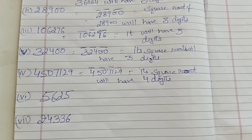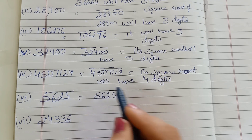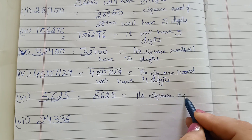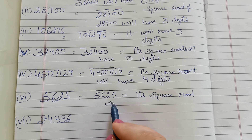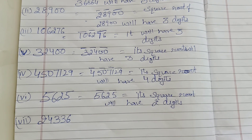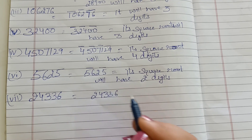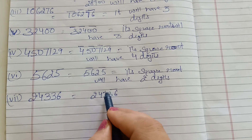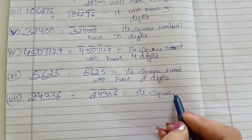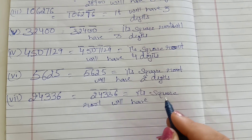Now next one is 5625. One bar, two bar. So its square root will have two digits — kyunki number of bars are two. Next question: 24336. Start one bar, two bar, three bar. So it's square root will have three digits.